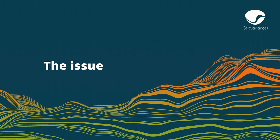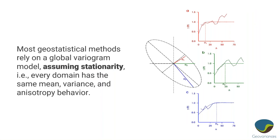So what are we talking about? We're doing resource estimation and geostatistics, and when we do this we assume stationarity — we're assuming that things are somehow statistically the same throughout our domain. In particular, we're going to assume that the direction of anisotropy is the same. So if there's a principal direction of continuity, it's going to be the same throughout our domain, but that's not always a realistic assumption.